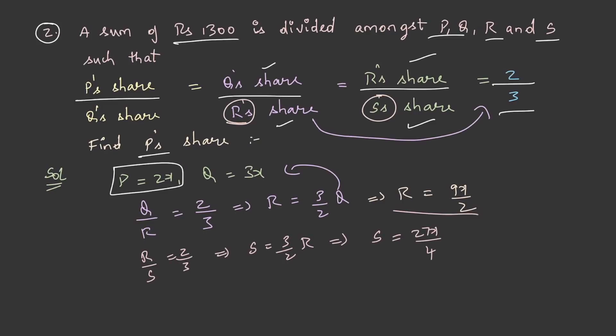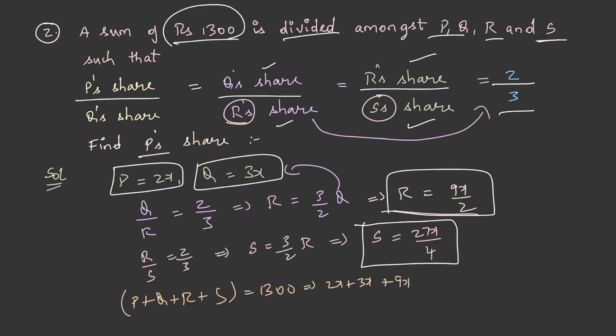Now, P is equal to 2x, Q is equal to 3x, R is equal to 9x by 2 and S is equal to 27x by 4. And it is given as a sum of rupees 1300 is divided among P, Q, R and S. Therefore, P plus Q plus R plus S is equal to 1300. From this, 2x plus 3x plus 9x by 2 plus 27x by 4 is equal to 1300. And this on simplification, we will be getting x is equal to 80.